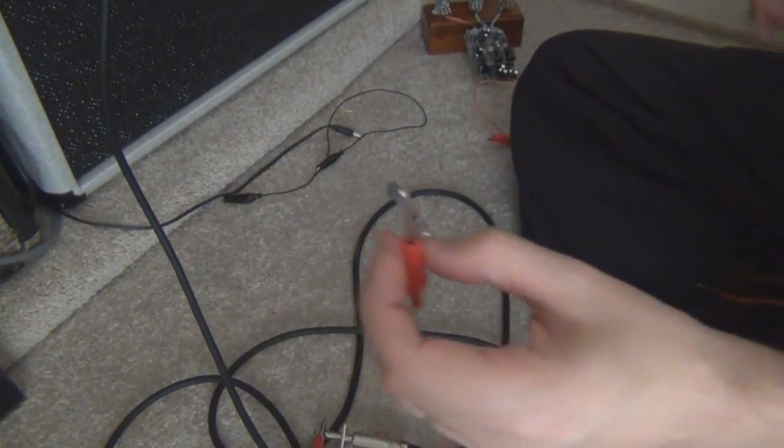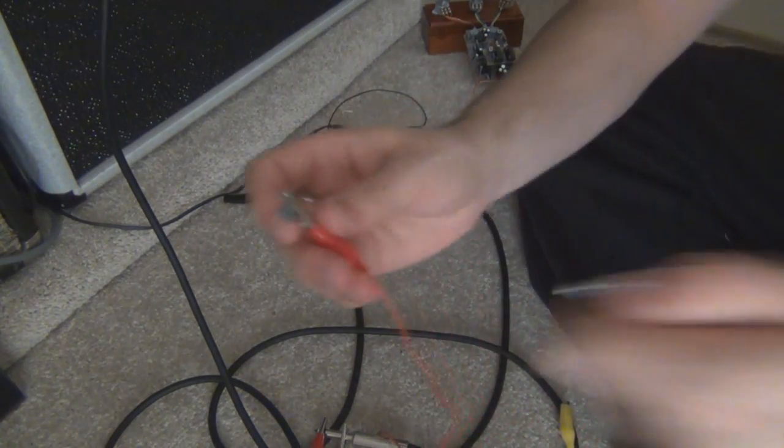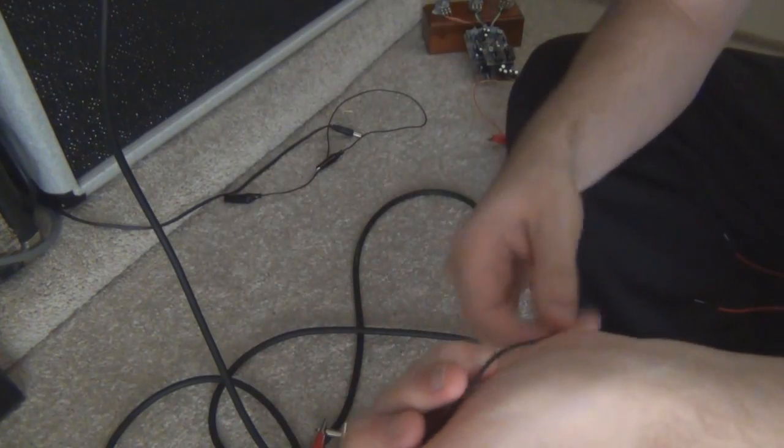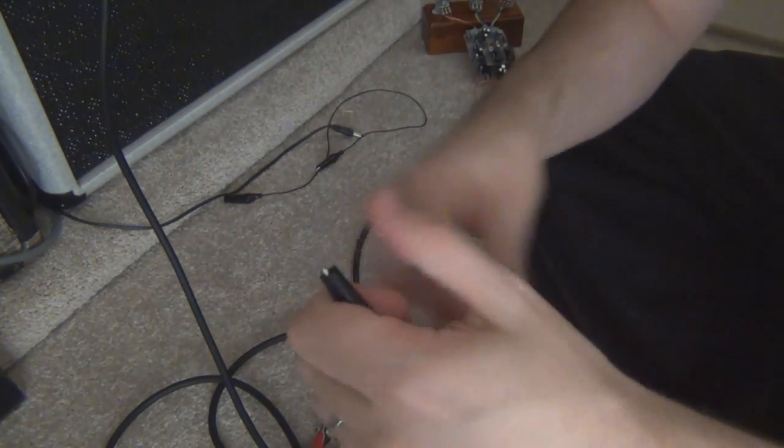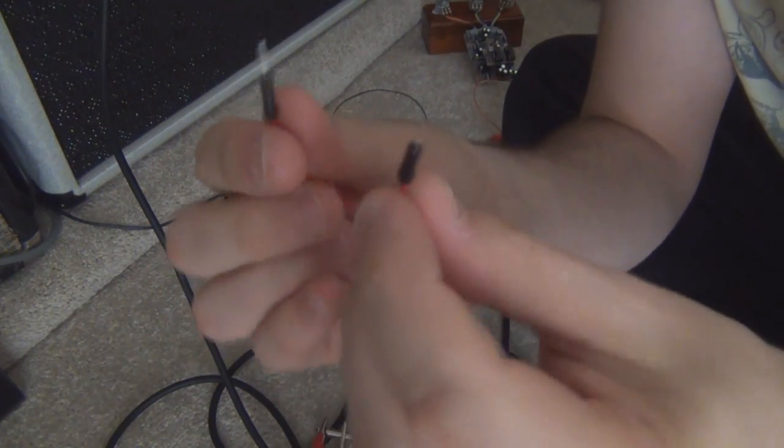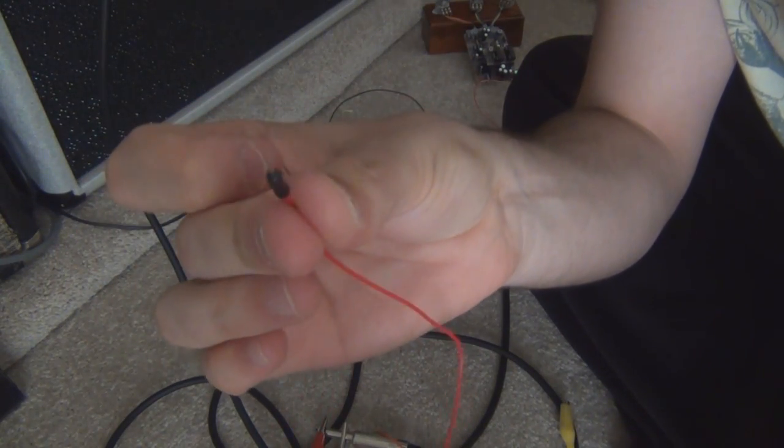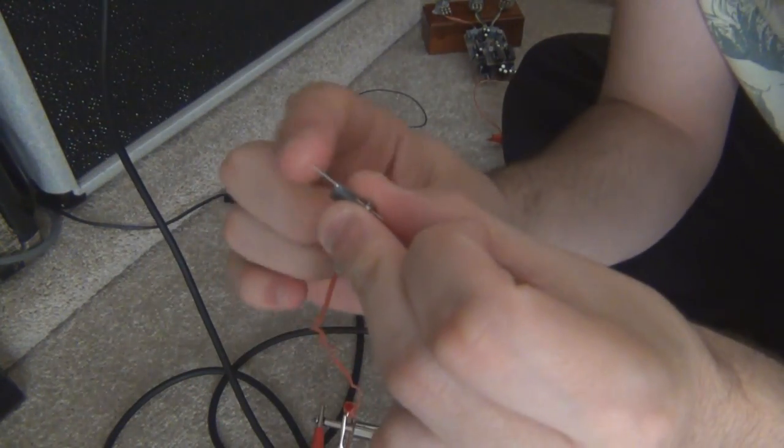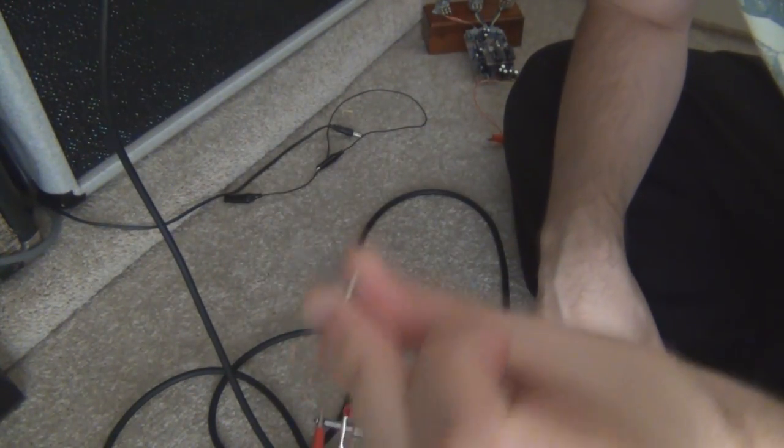But I usually put another alligator clip on the end of that, and then on the end of this, I found it very handy to use one of these breadboard jumpers. They've got two little pins on the end, so you just put the pin on that and then you use this end to probe the effect. You don't need any of this extra stuff on the end if you don't want it. You can use the end of the capacitor if you find that easier.